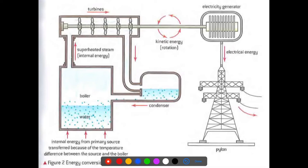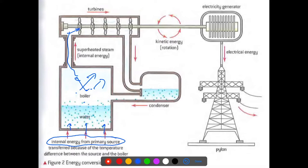This is a quick example of what a power plant would look like. Usually you have some type of primary source — the primary source usually produces heat. The heat goes into water which then boils. When you add heat to the water, the potential energy in the liquid is going to increase until it turns into a gas, and then the energy can go purely into the kinetic energy of these molecules.